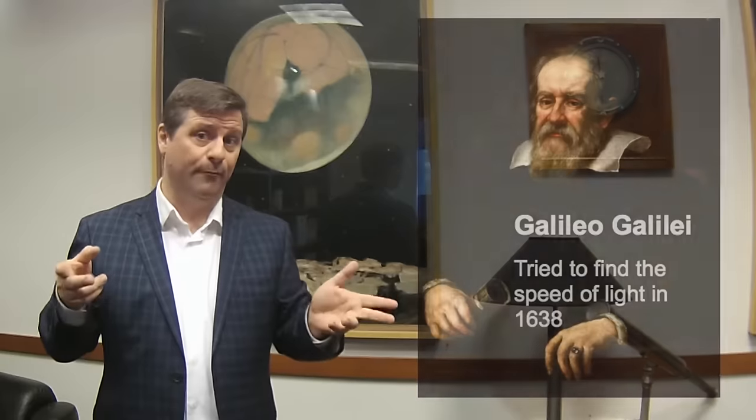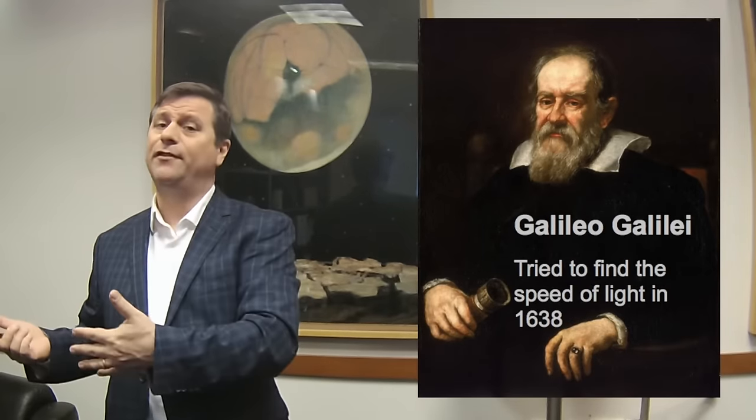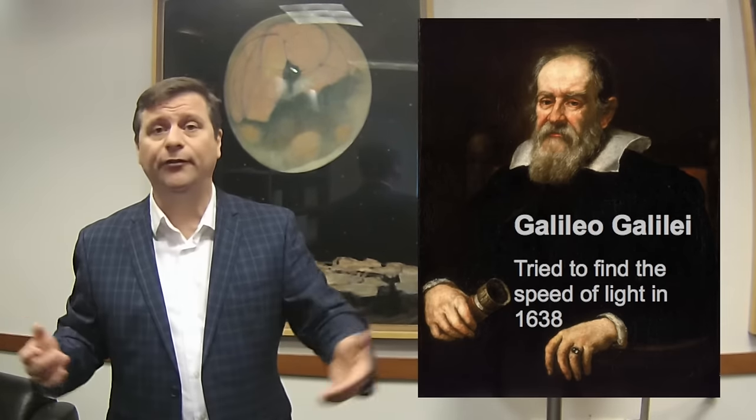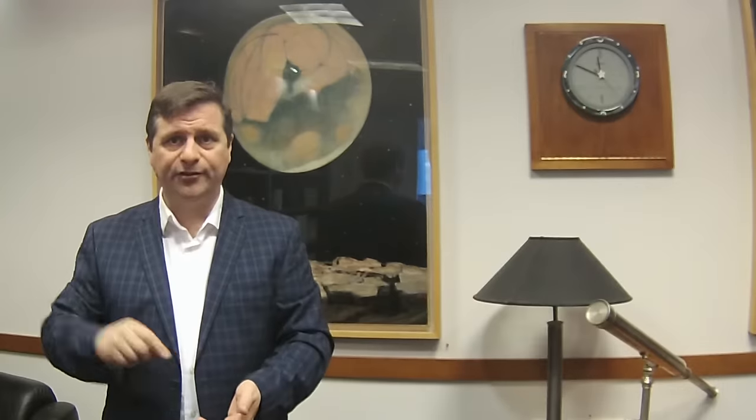Let's go back to 1638. Galileo tried to measure the speed of light by putting people with lanterns on hilltops miles apart — one would open their lantern, and when the other saw it, they'd open theirs, and Galileo would time it with his heartbeat. He couldn't find any difference. It was too fast for his heartbeat — about the same time it took someone to lift the lantern. From his measurements, he said: if it's not infinite, it's really fast.